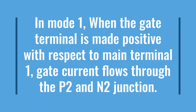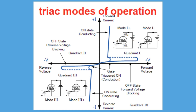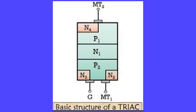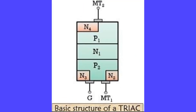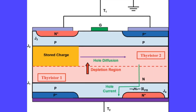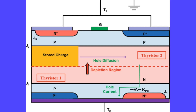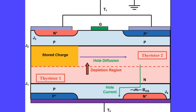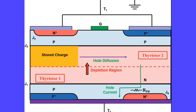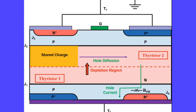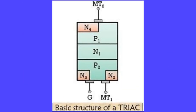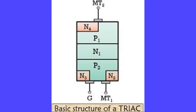In Mode 1, when the gate terminal is made positive with respect to MT1, gate current flows through the P2-N2 junction. When this current flows, the P2 layer is flooded with electrons, which diffuse to the edge of junction J2, or the P2-N1 junction. These electrons collected by the N1 layer build a space charge on N1. More holes from the P1 region then diffuse into the N1 region to neutralize the negative space charges. These holes arrive at junction J2 and produce a positive space charge in the P2 region, causing more electrons to inject into P2 from N2. This results in positive regeneration, and finally the main current flows from MT2 to MT1 through the regions P1-N1-P2-N2.